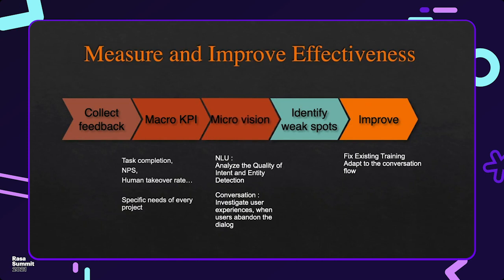For instance, in the case of the Orange troubleshooting chatbot, we want to understand why some customers have given up during the set-top box reset. So we can track these particular conversations to investigate their experience. It could be due to incorrect detection of intent and entity, or the explanation from the chatbot wasn't clear enough for users to understand.